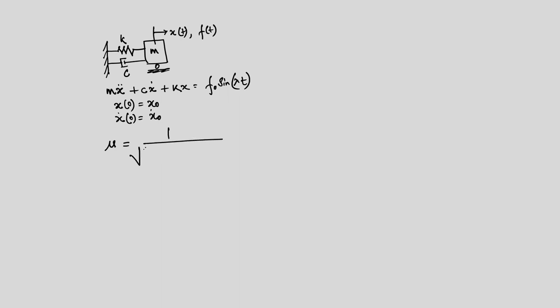The dynamic magnification factor expression has √[(1 − r²)² + (2ηr)²] in the denominator. On the x-axis we have r, the frequency ratio, which is λ divided by ωₙ, and on the y-axis we have the dynamic amplification.